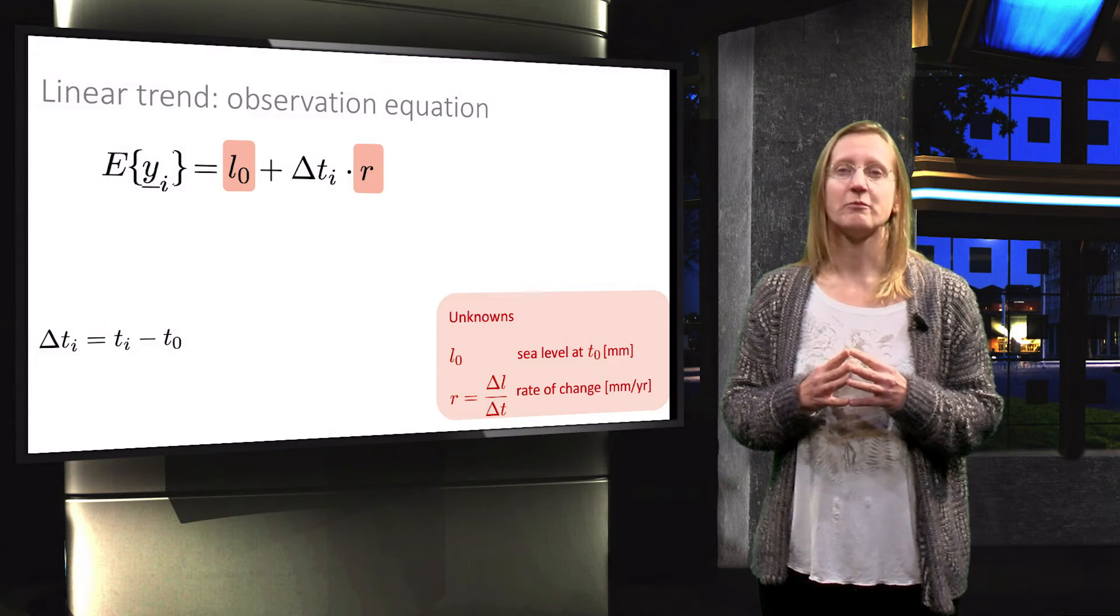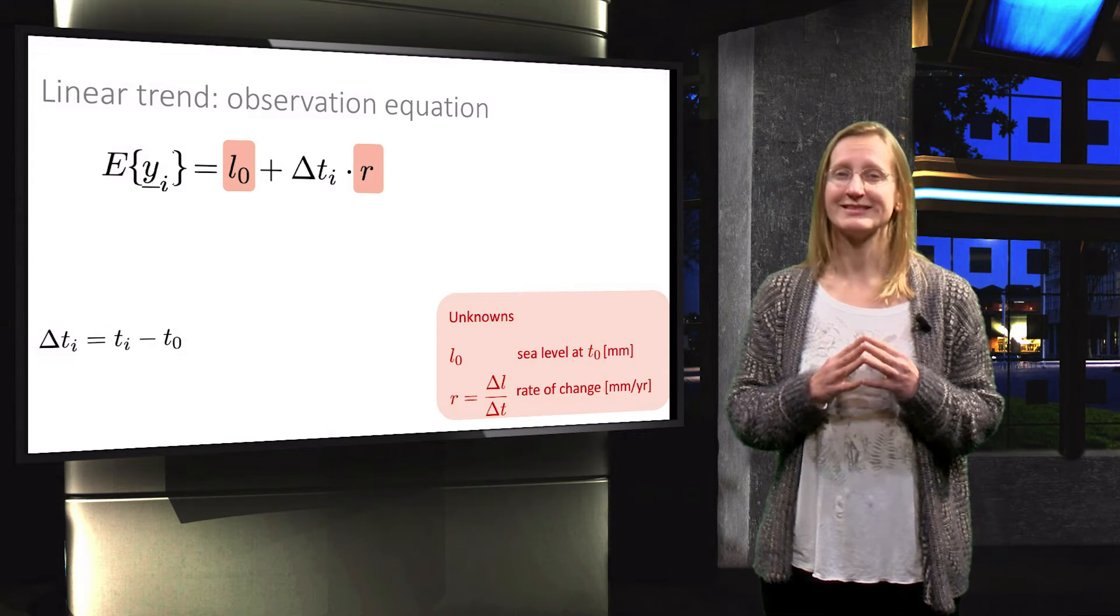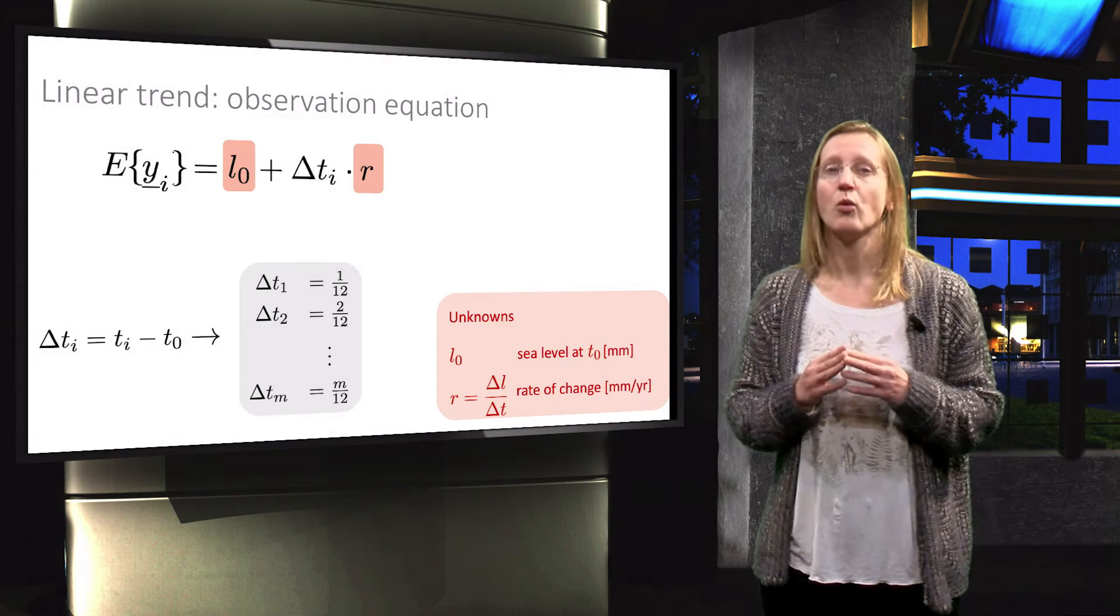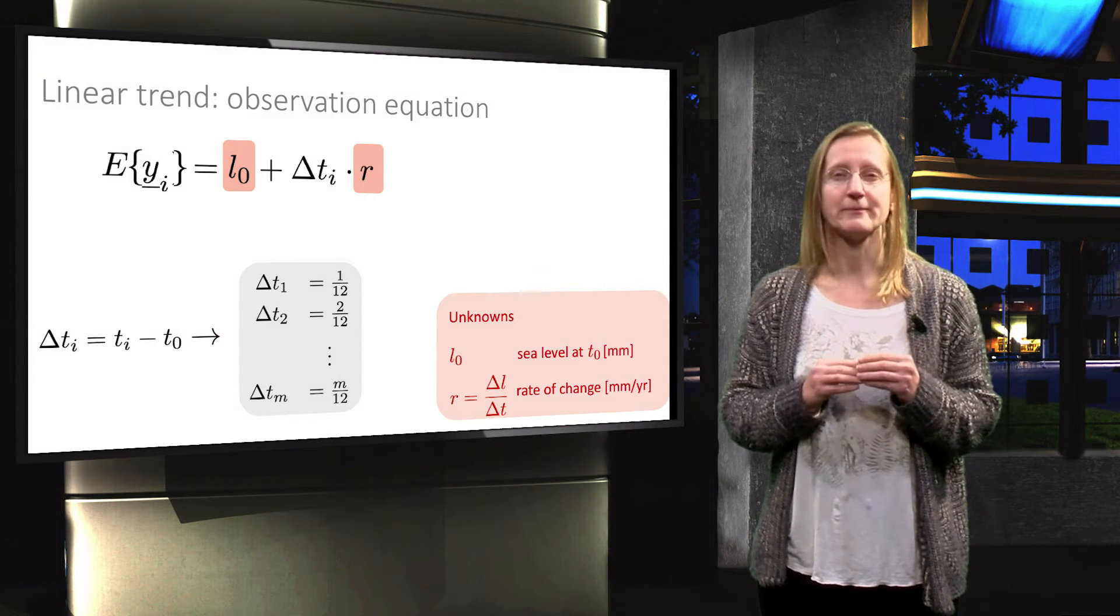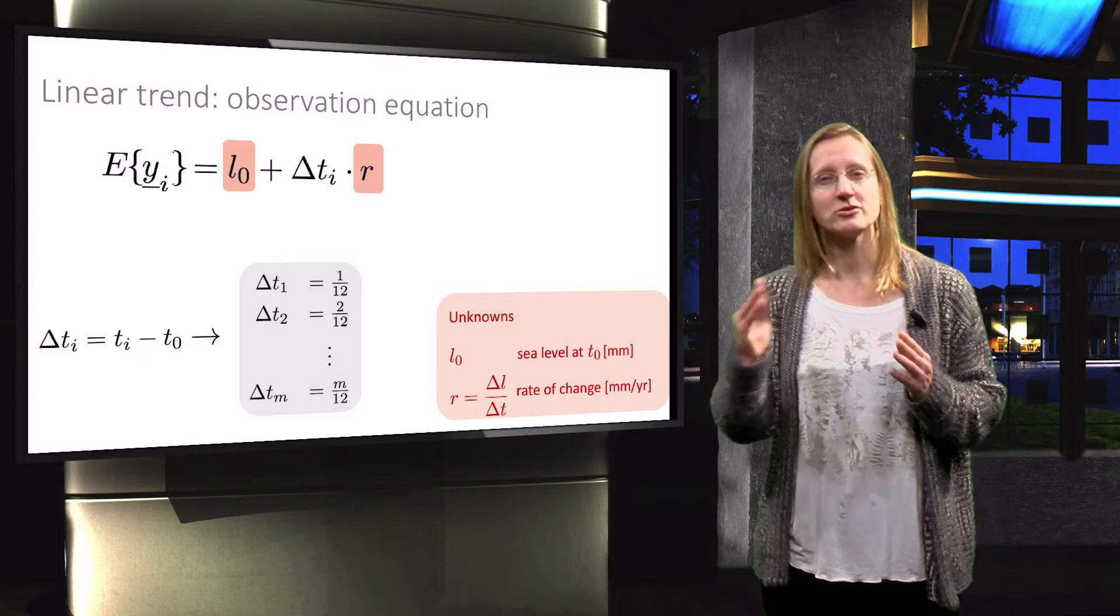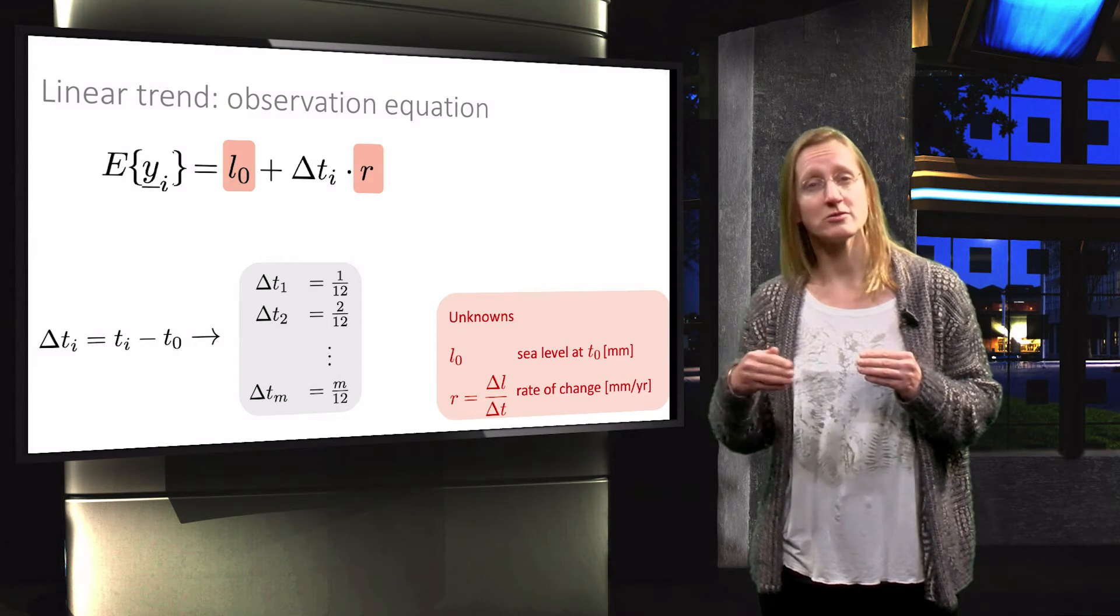As we have monthly observations, for the first observation the time interval will therefore be 1 twelfth, since our time is in units of one year. For the second observation it is 2 twelfth, and so on and so forth.